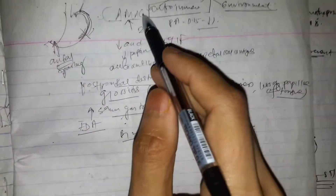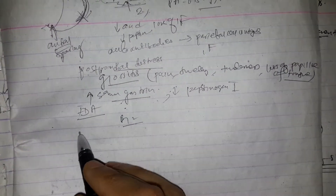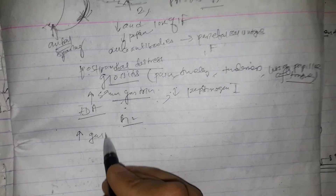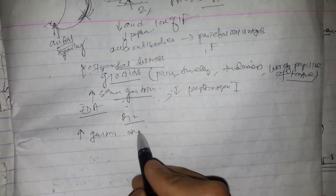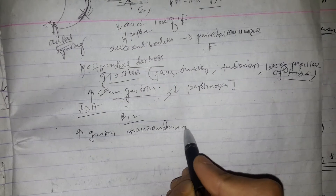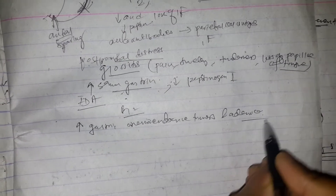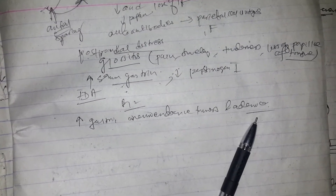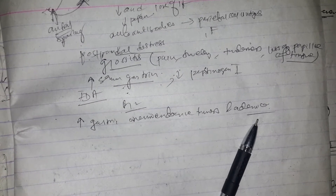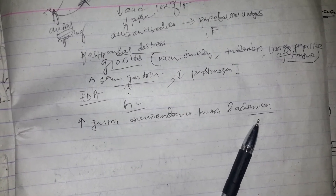Manifestations of B12 deficiency include anemia, macrocytosis, high MCV, elevated methylmalonic acid, pancytopenia, and hypersegmented neutrophils. Patients with AMAG are at increased risk of development of gastric neuroendocrine tumors and adenocarcinoma.